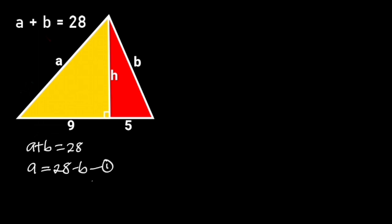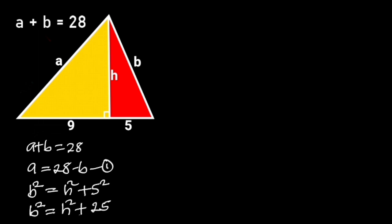Now, let's focus on the red triangle. The red triangle is a right triangle. From Pythagoras' theorem, B squared is equal to H squared plus 5 squared. 5 squared is 25, so B squared is equal to H squared plus 25. If we make H squared the subject, we will have H squared is equal to B squared minus 25. Let's call this equation 2.